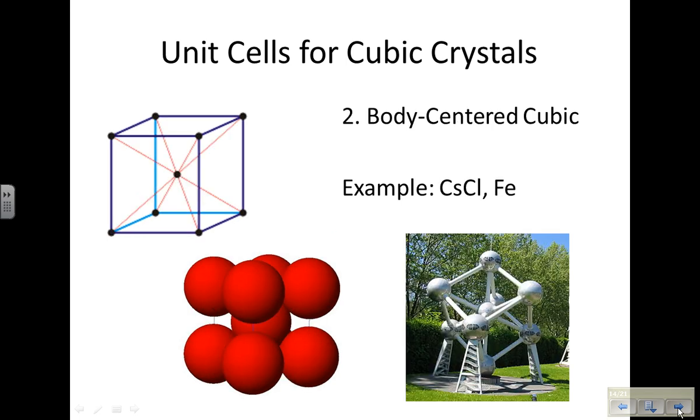Our second unit cell for a cubic crystal is a body-centered cubic. You might recognize the Atomium structure in the bottom right. This is just a scale model that they made, and now it's in a garden for people to see. This body-centered has an atom in the center and atoms at each vertex. Iron expresses the body-centered cubic, sometimes called BCC. Cesium chloride also expresses a body-centered cubic unit cell.